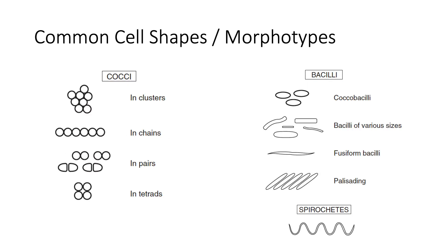Let's now take a look at the common cell shapes or morphotypes. There are two main groups. You have cocci, which are spherical bacteria, and you have bacilli, which are rod-shaped bacteria. Here you can see some common arrangements. For cocci, you might be able to see them in clusters, chains, pairs, and in tetrads.